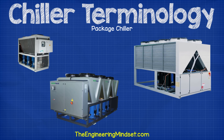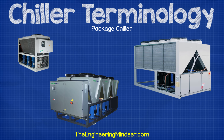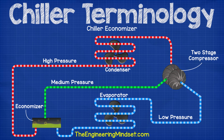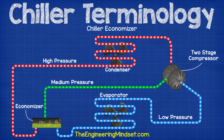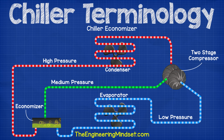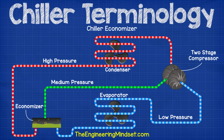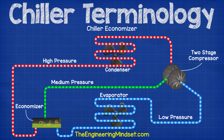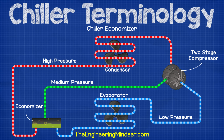Package chiller. This refers to a chiller which comes from the manufacturer in one complete bundle with all the major refrigeration cycle components in one package. This is the most common type of chiller and can include water or air-cooled designs. Chiller economiser. An economiser is used in some centrifugal type chillers with two-stage compressors to reduce energy consumption. A special tank is placed between the condenser and the evaporator — the refrigerant is partly throttled into the tank and any refrigerant which vaporises is sent straight to the second stage of the compressor. The rest of the liquid refrigerant continues to the evaporator, reducing the work required by the compressor and thus saving energy.